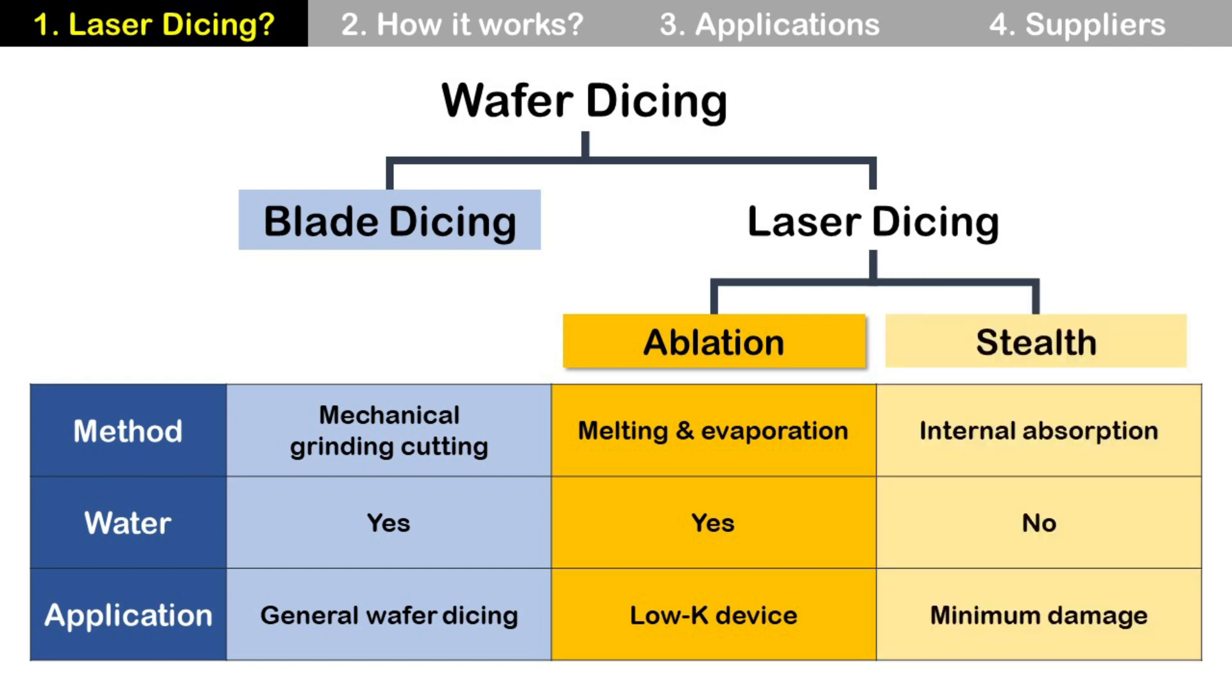Third one is stealth dicing using laser. It is a dry process and does not use water. There is no mechanical contact for dicing, so it is a good solution for wafers which need to avoid mechanical damages. The last one is plasma dicing, and we will talk about it some time later.